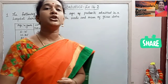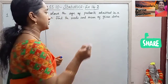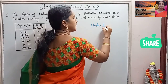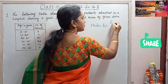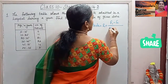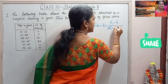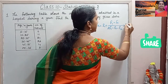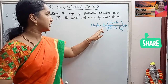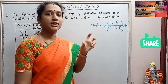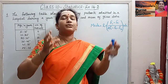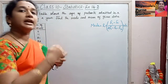For mode we are going to use one formula. Mode is equal to L plus (F1 minus F0) divided by (2F1 minus F0 minus F2) into H. The first thing we need to calculate is the modal class, which is the class with the maximum frequency.